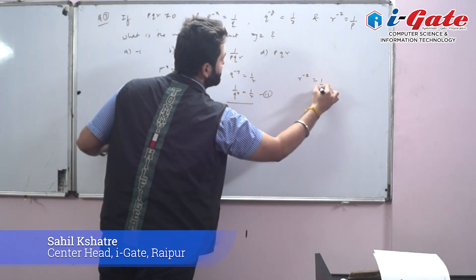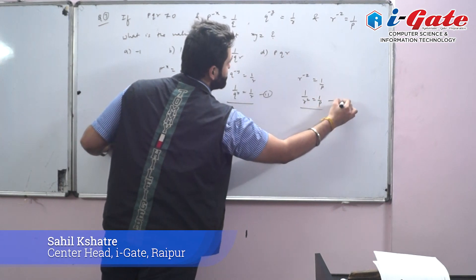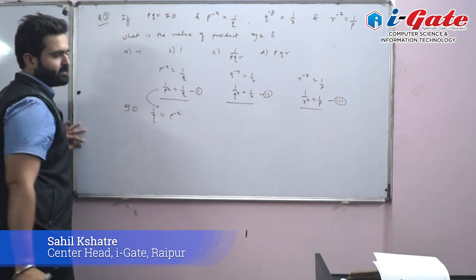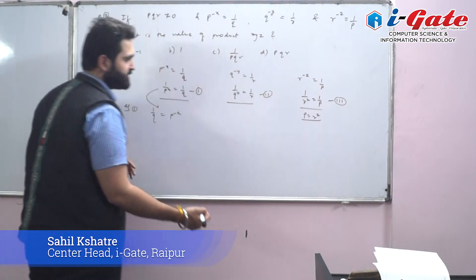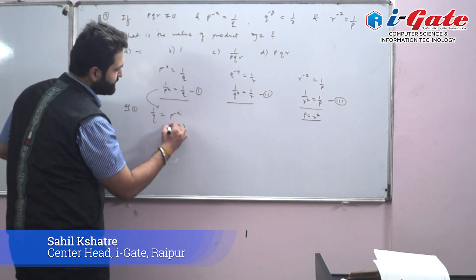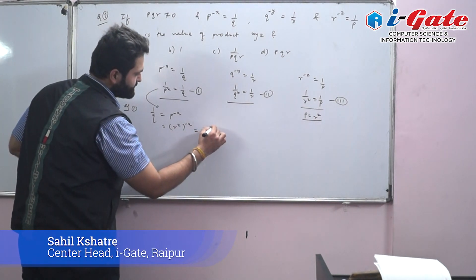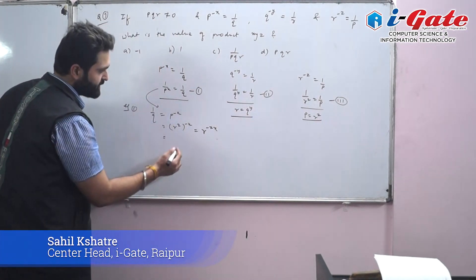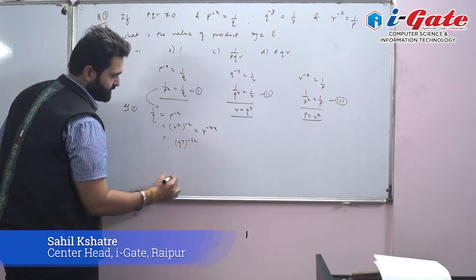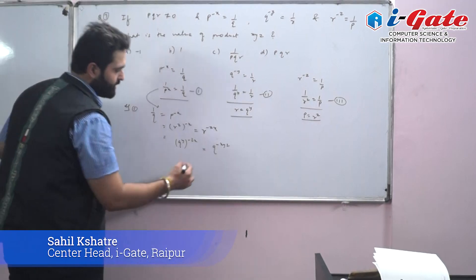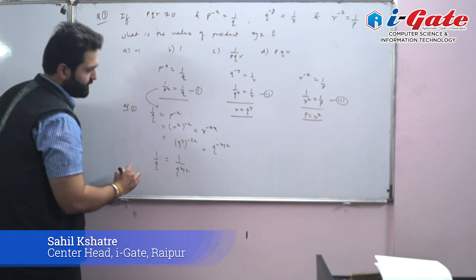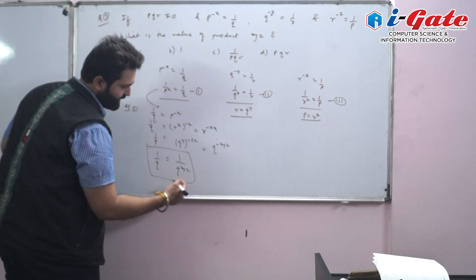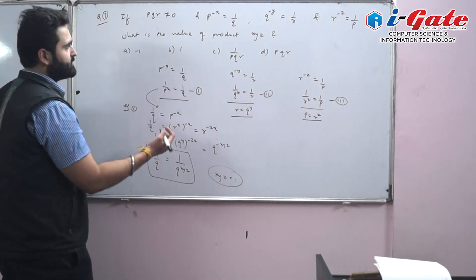From equation 1: 1/q = p^(−x). From equation 3: 1/r^z = 1/p, so p = r^z. Substituting p = r^z into equation 1 gives r^(−zx). From equation 2: r = q^y. Substituting gives q^(−xyz) = 1/q = q^(−1). Comparing powers: xyz = 1. Answer is option B.